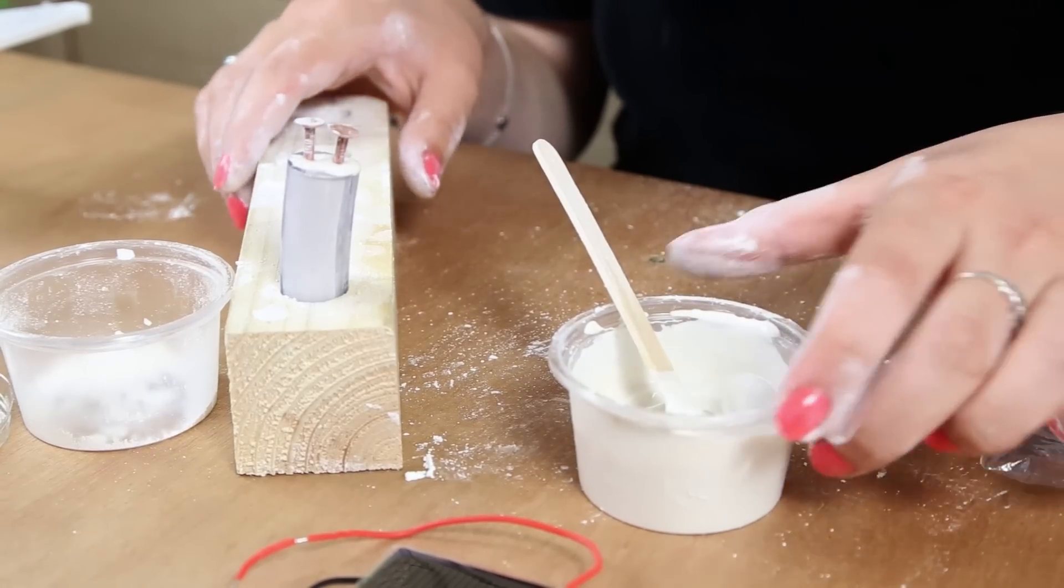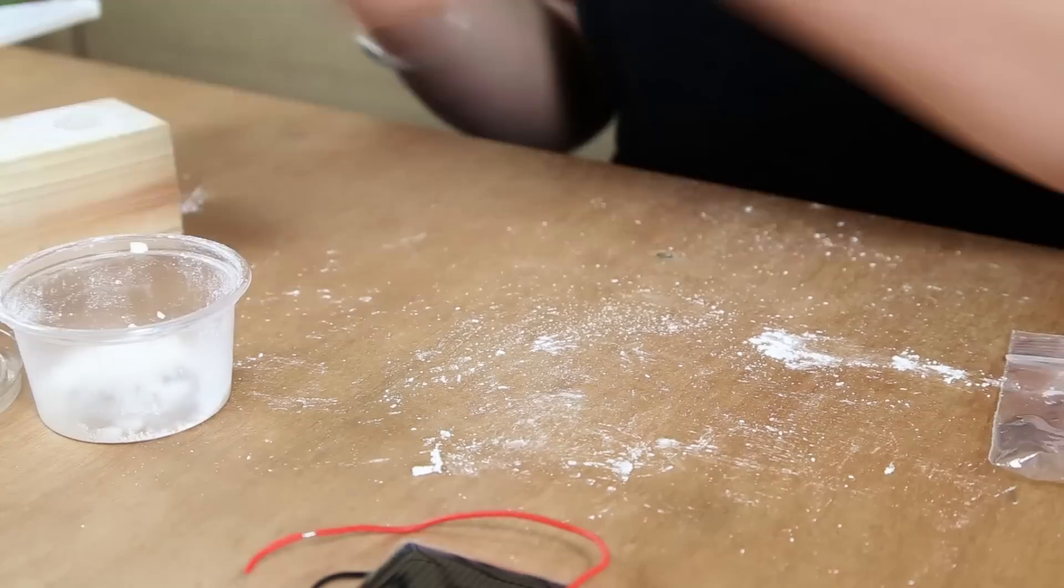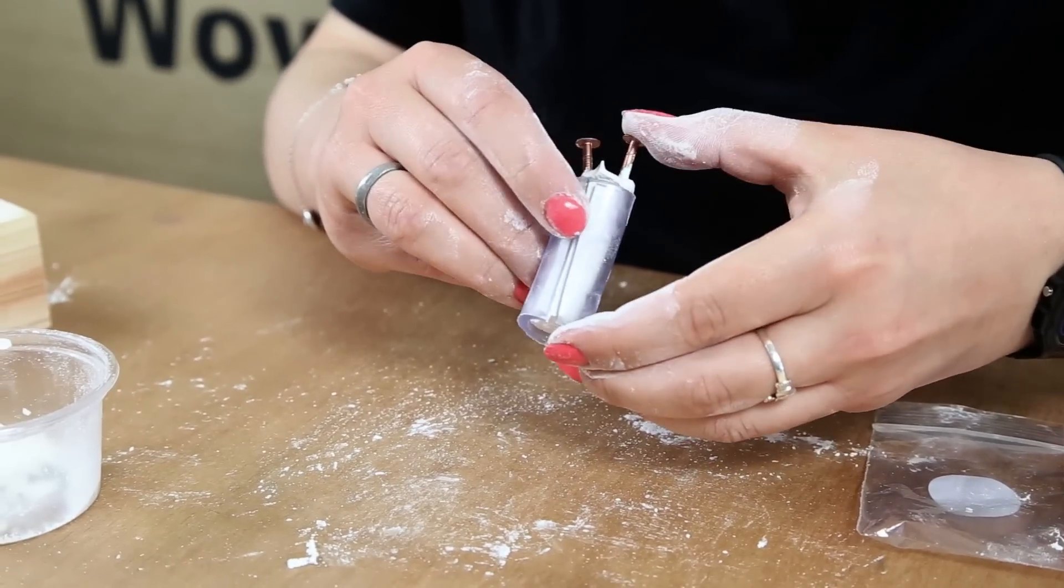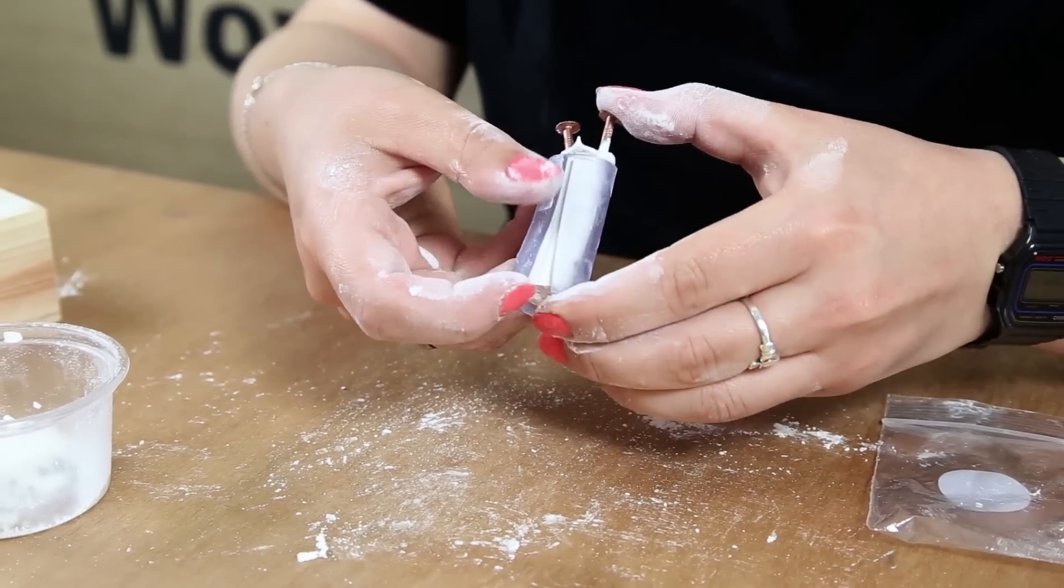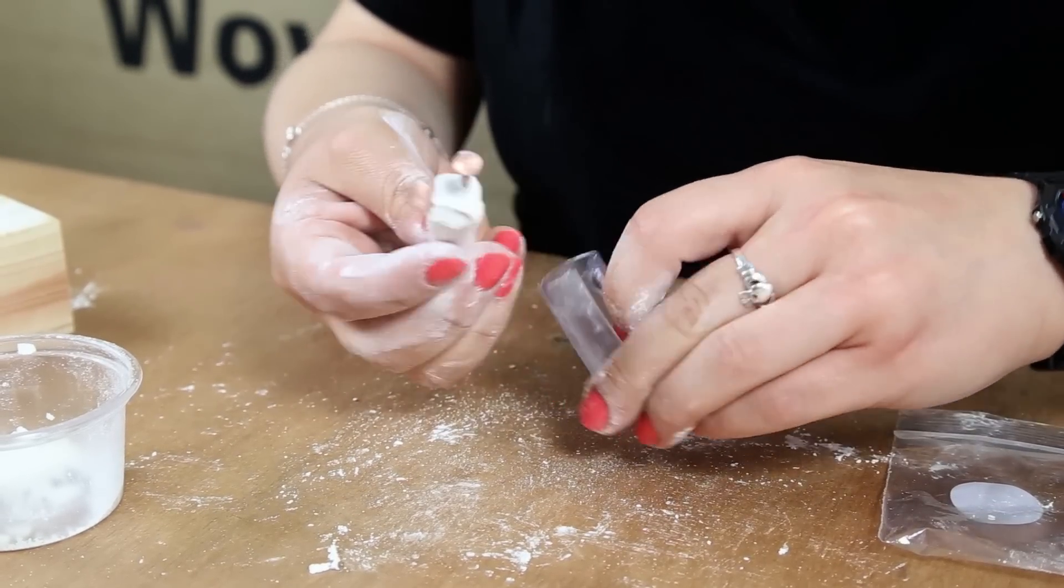When your sensor is fully dried, it should look like this one. So it's still inside its case. And when you want to take it out of the case, you just peel back the plastic and it should come out like that.